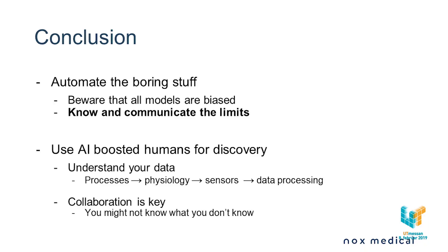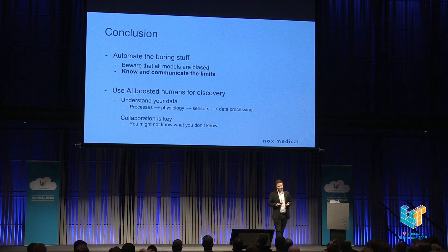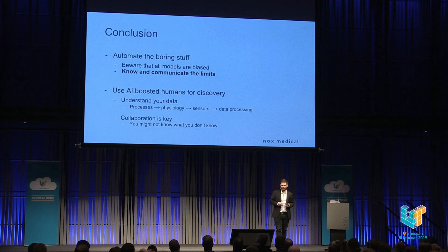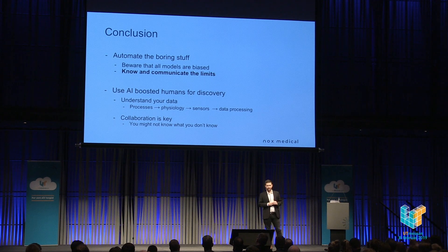To conclude: how do we change healthcare using AI? We want to automate the boring stuff, but beware that all models are biased — we have to know and communicate the limits of our models and algorithms. We want to use AI-boosted humans for discovery, but to do that we really need to understand the data: how it's created and how it's processed. Finally, collaboration is key, because you might not know what you don't know.